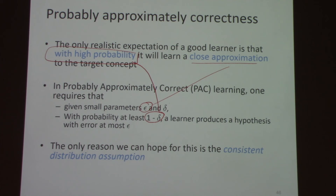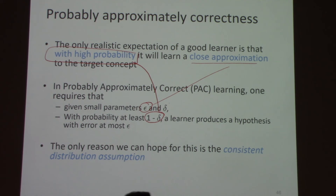In order to make this kind of statement possible, we need to make two assumptions. The first is the consistent distribution assumption: your training examples are drawn from the same fixed but possibly unknown distribution from which your classifier will be tested. In other words, the world doesn't change too much — the future will not be too different from the past. The second assumption is that each training example is sampled randomly from this fixed unknown distribution independently of each other. This is the IID assumption — independent and identically distributed.